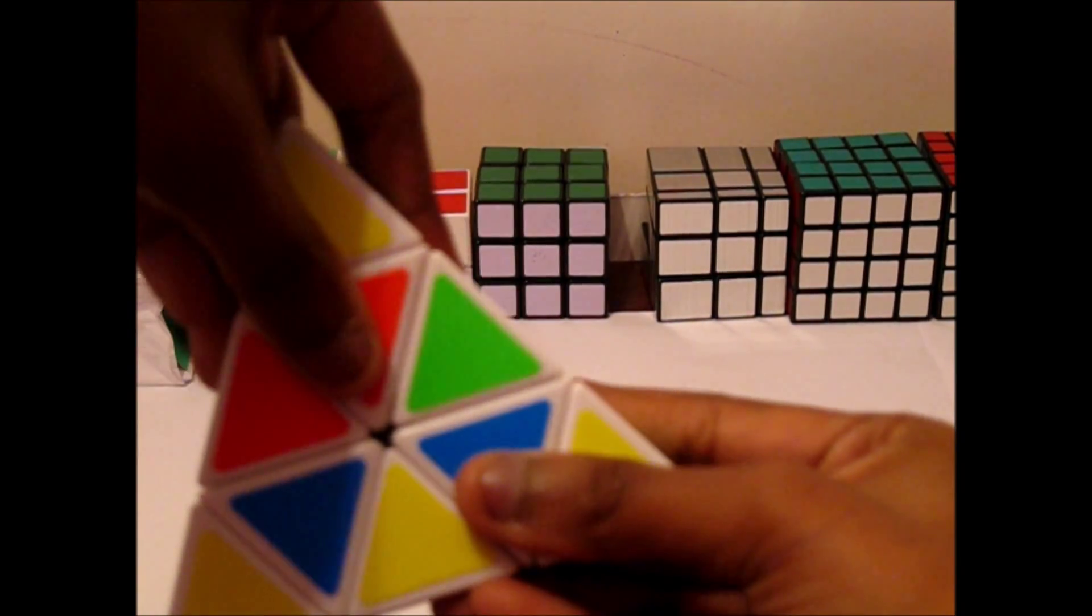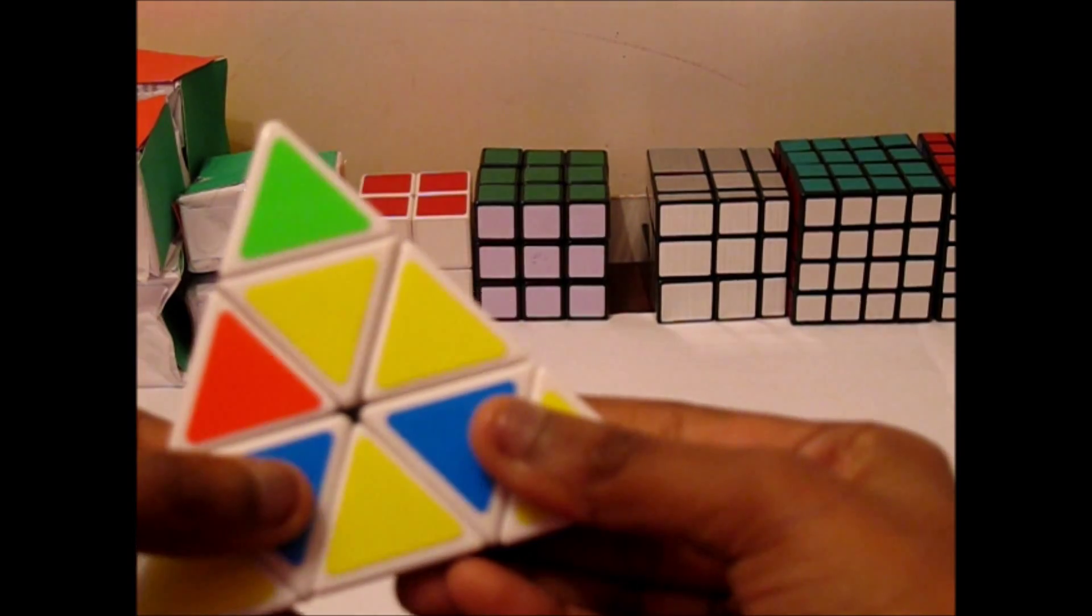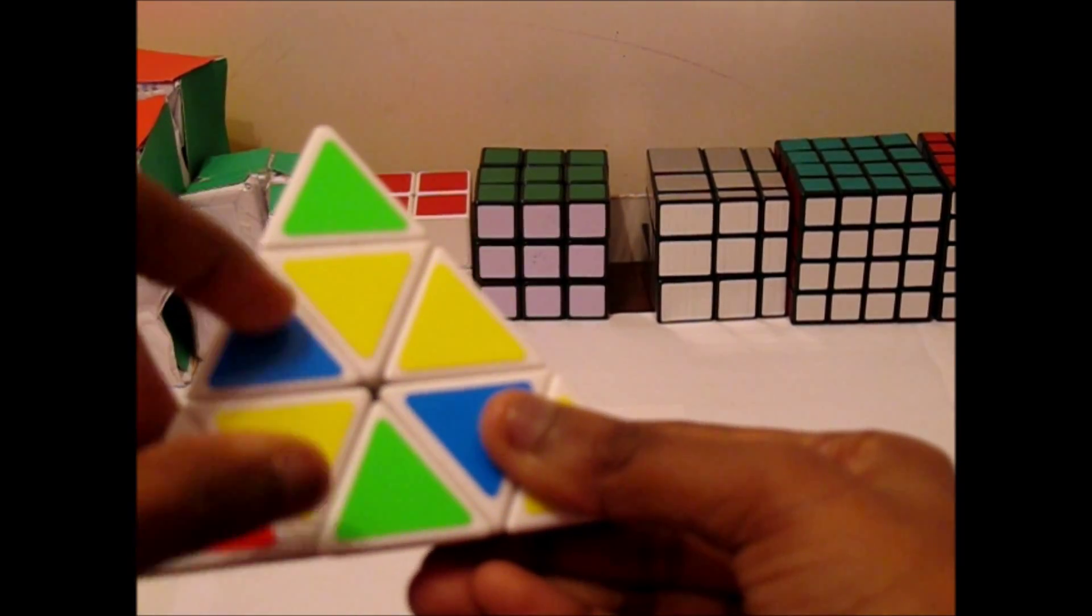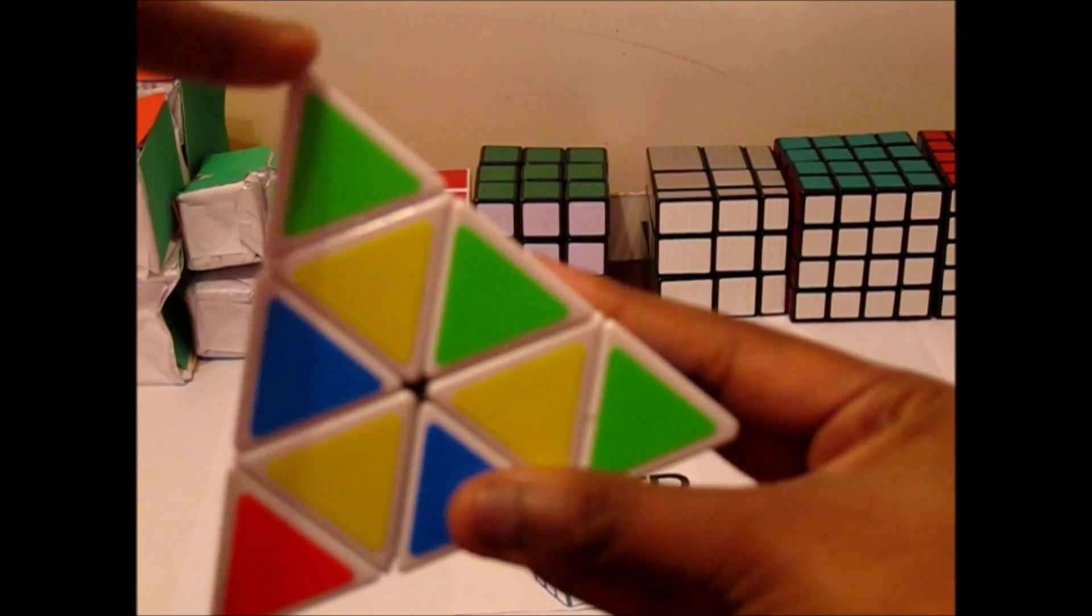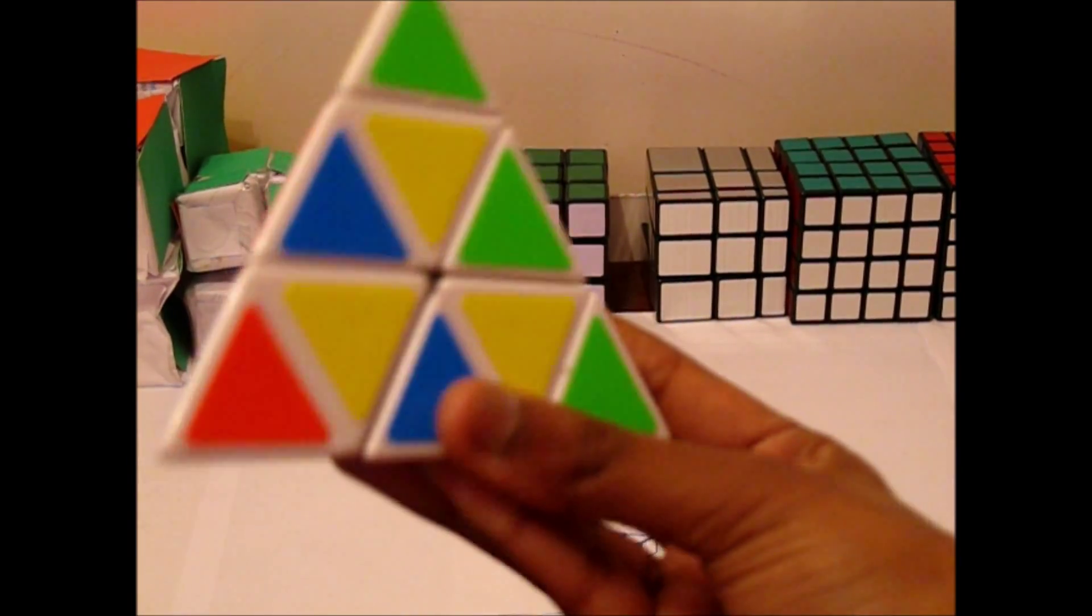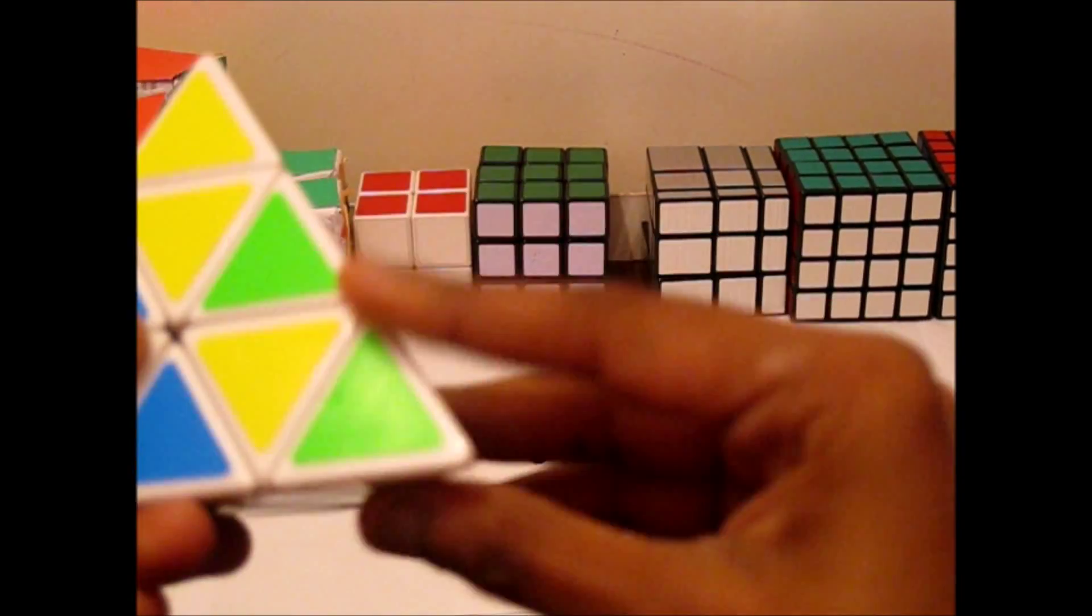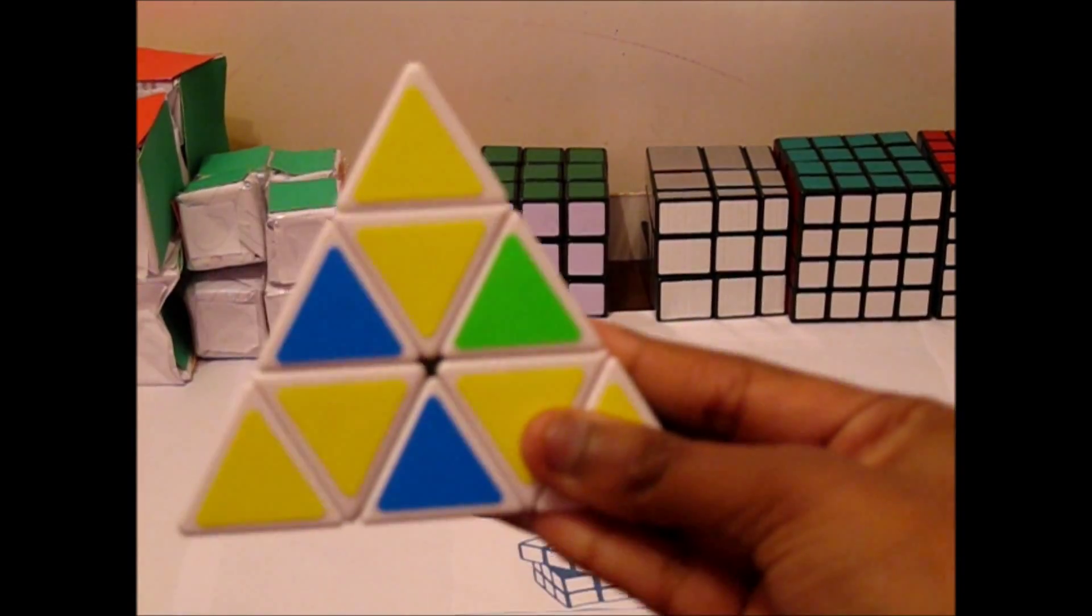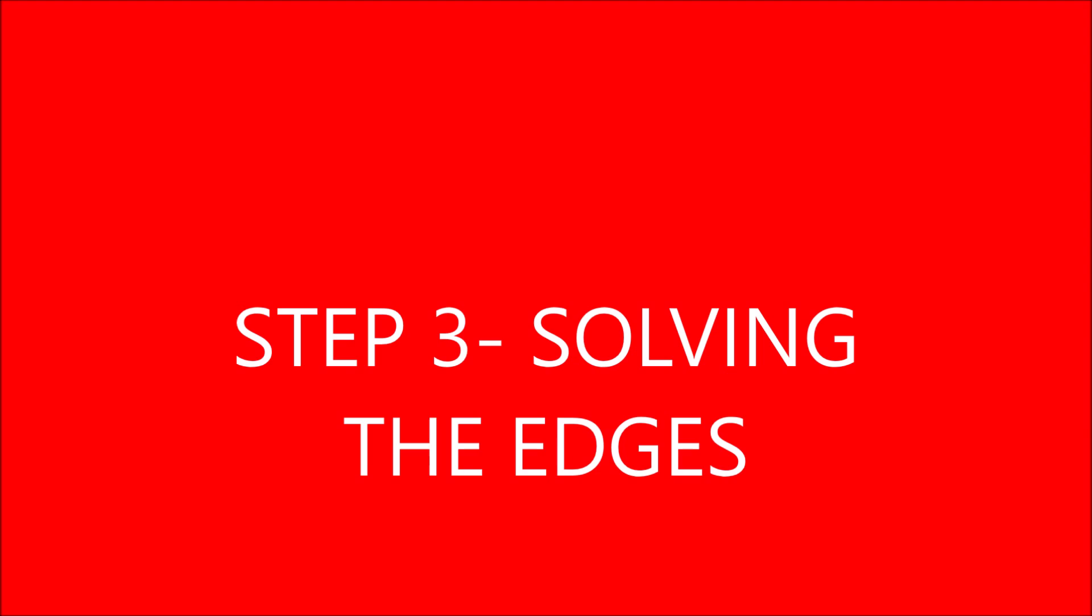Don't worry if your tips get messed up, but make sure when you move the Pyraminx around, you don't actually move it like this. So all you have to do is you keep turning the top face until you've got this, you keep turning the left face until you've got this, and the right face until you've got this. So now, as you can see, our tips have been screwed up, so we can just bring them back up like so.